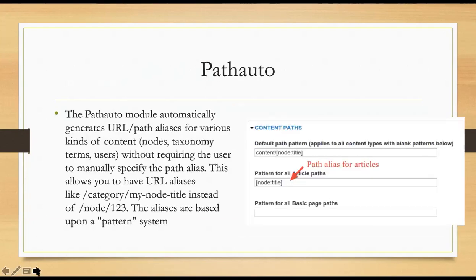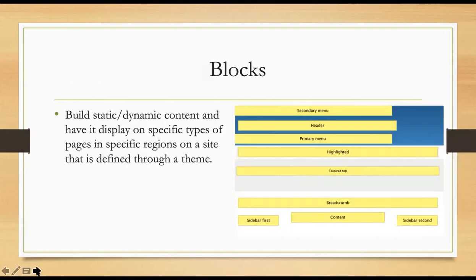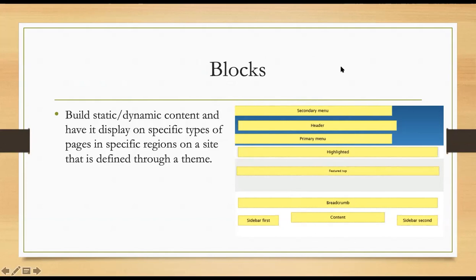So those are my top two favorites everyone should install: CKEditor and PathAuto. Regarding blocks — at a high level, your theme defines where the blocks are. You can put any kind of content in areas like the secondary menu. It doesn't have to be a navigation menu; you can put plain text there too. That's what makes Drupal websites easy to build — you can define a piece of content to appear on one page or across all pages.